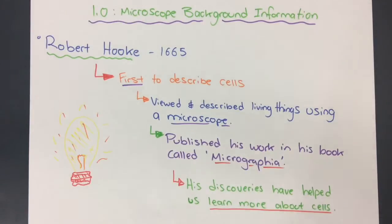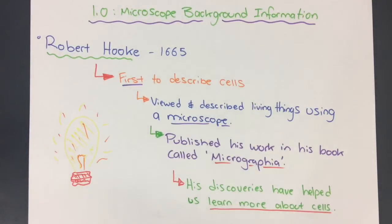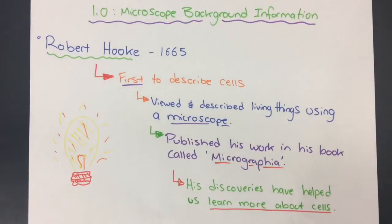In 1665, Robert Hooke was making some observations of living things under a microscope. One of those things was a piece of cork. When he was viewing it under the microscope, he noticed it had little holes that kind of reminded him of honeycomb — little holes with boundaries around them.